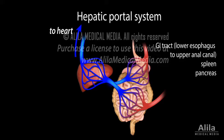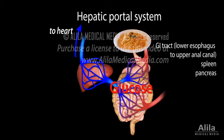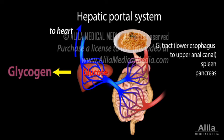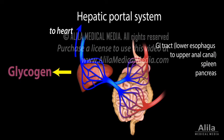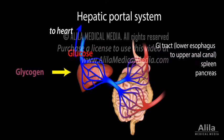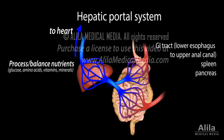First, the liver processes the nutrients and regulates the amount of nutrients that can enter the blood. For example, after a meal, when glucose spikes from digestion of carbs, the liver converts excess glucose into glycogen for storage. When the body is fasting, glycogen is converted back to glucose to be released to the blood. In other words, the liver controls the balance of blood sugar, preventing excessive fluctuations.